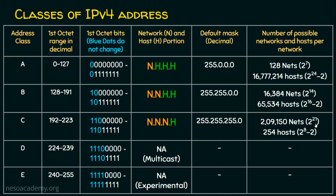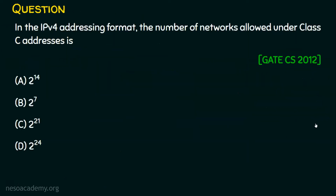So what is the answer? In the IPv4 addressing format, the number of networks allowed under class C is — out of 24 bits, 21 bits can be used — and the answer is 2 power 21.